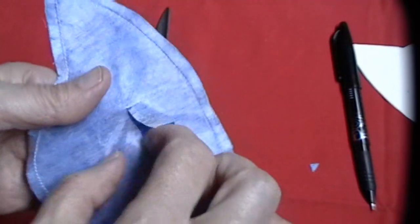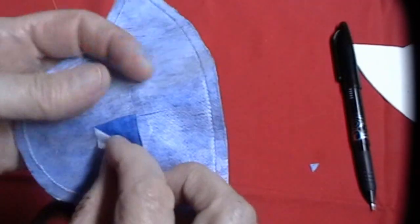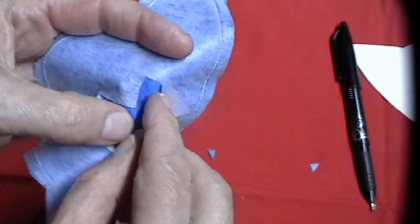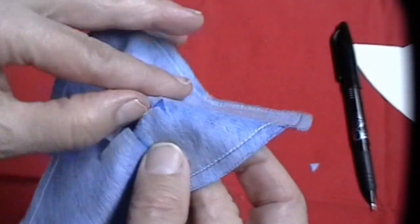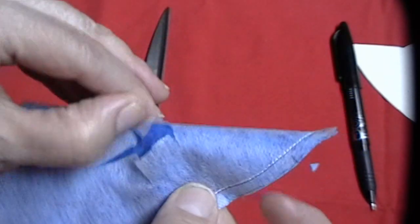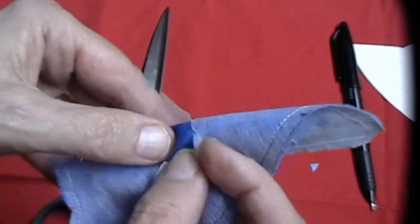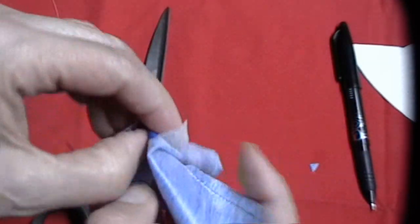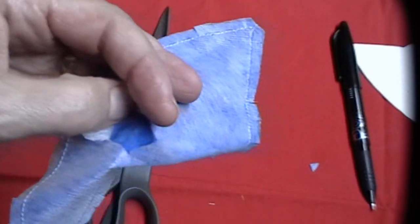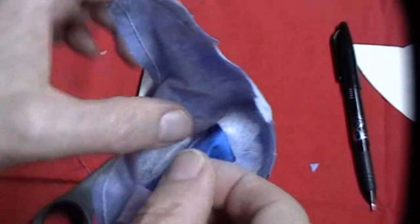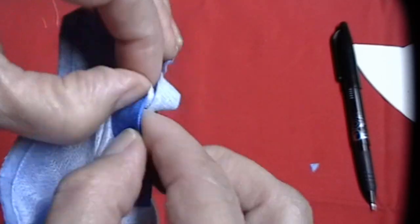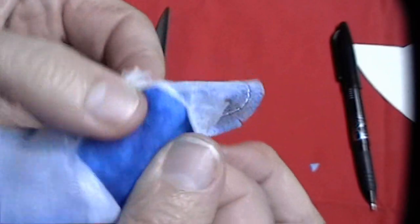It looks kind of like a circle. So we're going to reach in here and we're going to turn the fabric to the outside. Just kind of stick your finger in there and get hold of that fabric and pull it through. Just pull it through to the other side.